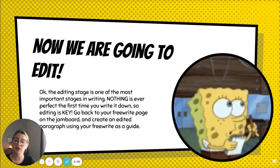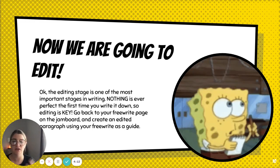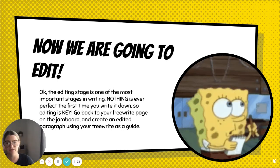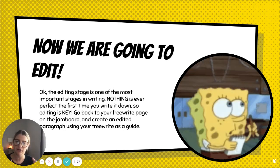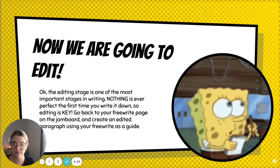What you're going to do is look at your free write — whatever you wrote about where you want to be in five years. From that free write, you're going to create another paragraph that uses those transitional words and phrases. Pare it down, use punctuation, make sure your spelling and grammar are correct, and actually create a cohesive paragraph that explains where you want to be in five years based on your free write. Go ahead and do that now.